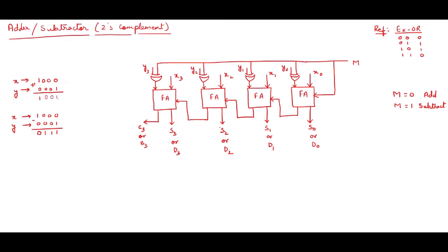Two examples are taken for x and y. For x the value is 8 and y is 9 in binary format for addition, and the same values are taken in binary format for subtraction — the answers will be different. Let us verify whether it is working properly. I have taken a reference of the XOR gate because data will come through it, so let us review the XOR gate.